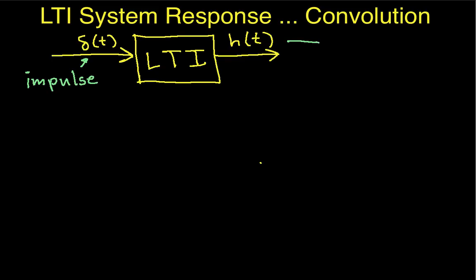But they're a useful abstraction. And the response of the system to the impulse, we're going to call its impulse response. And again, this impulse response we're going to call h of t.